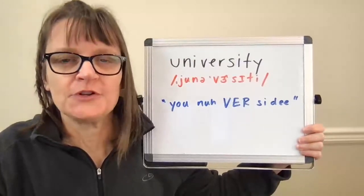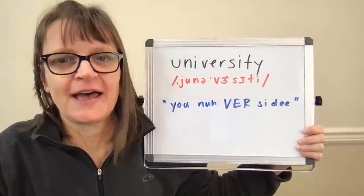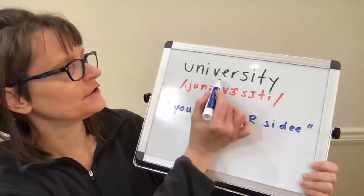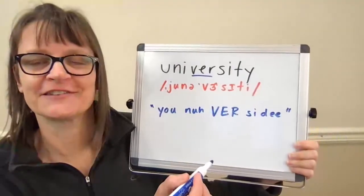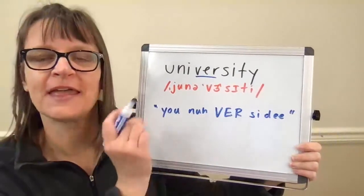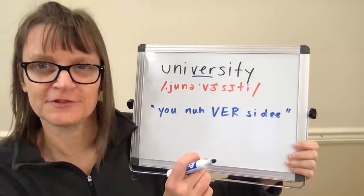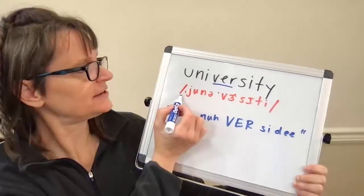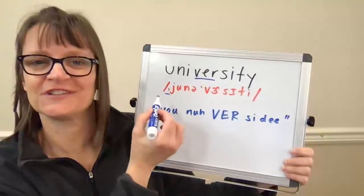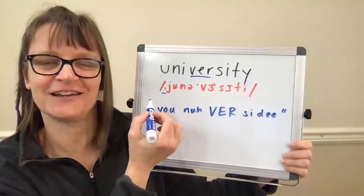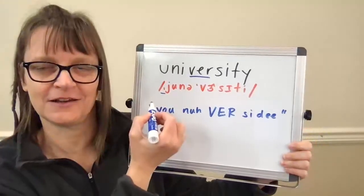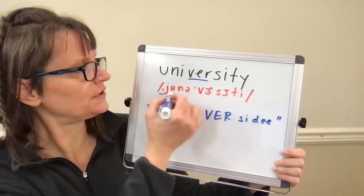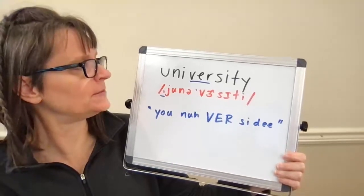So the word 'university' has third syllable stress. The 'ver' syllable is long and has the clear vowel, and the other syllables are shorter and reduced. We do have secondary stress on the first syllable, which you can see with a little line below the word before the stressed syllable.